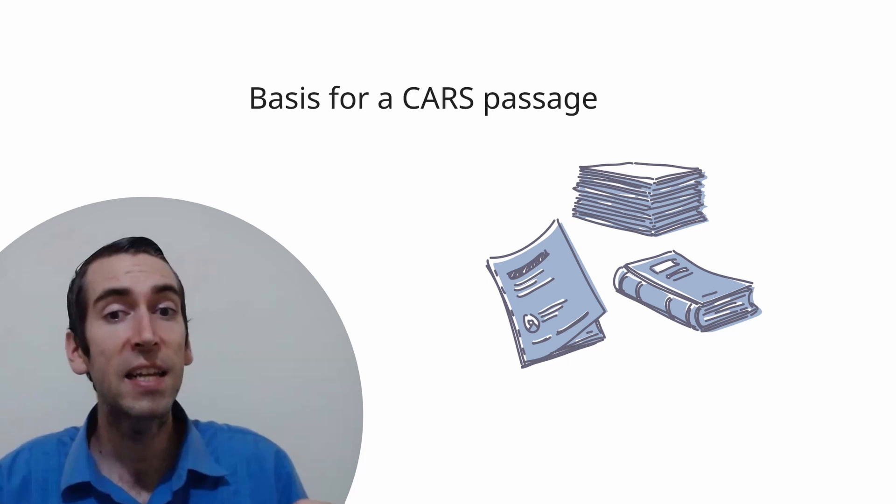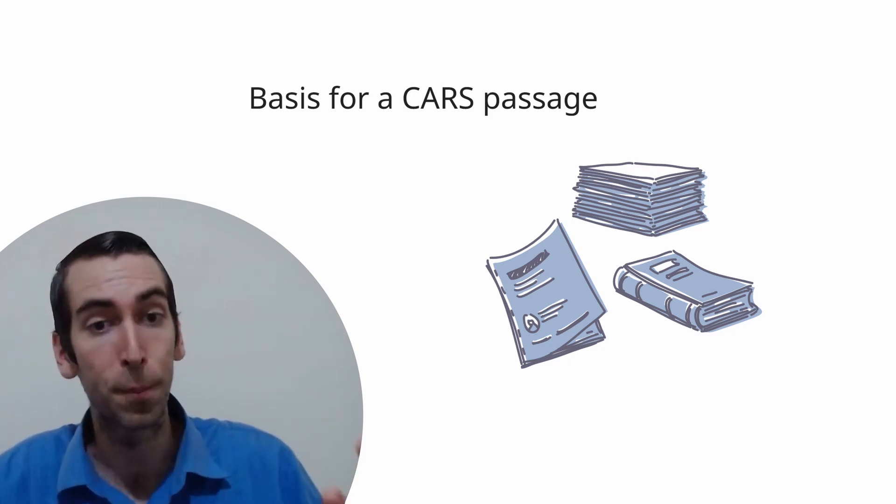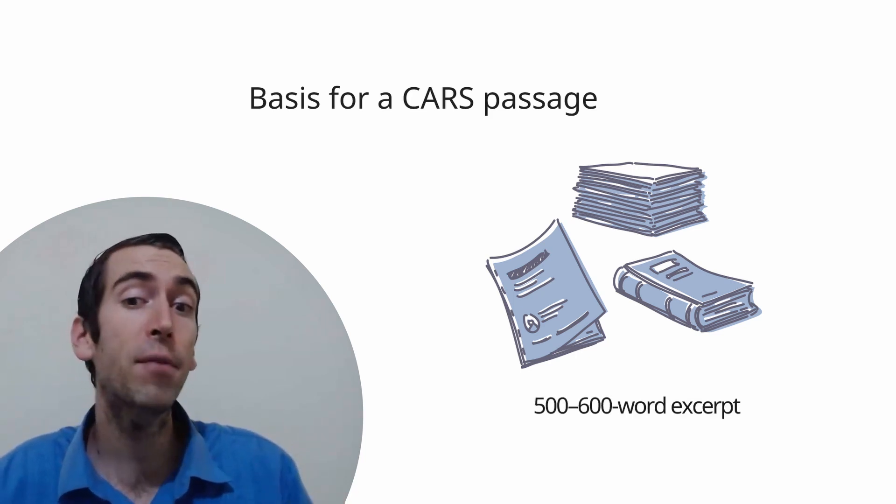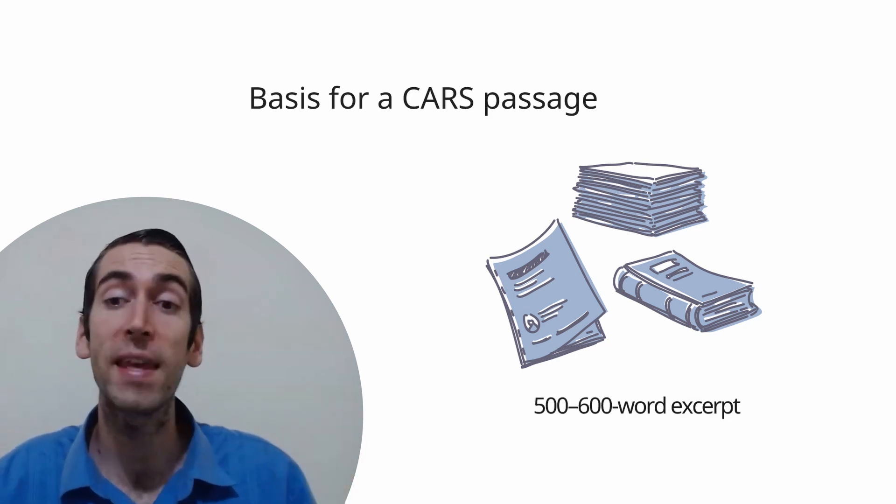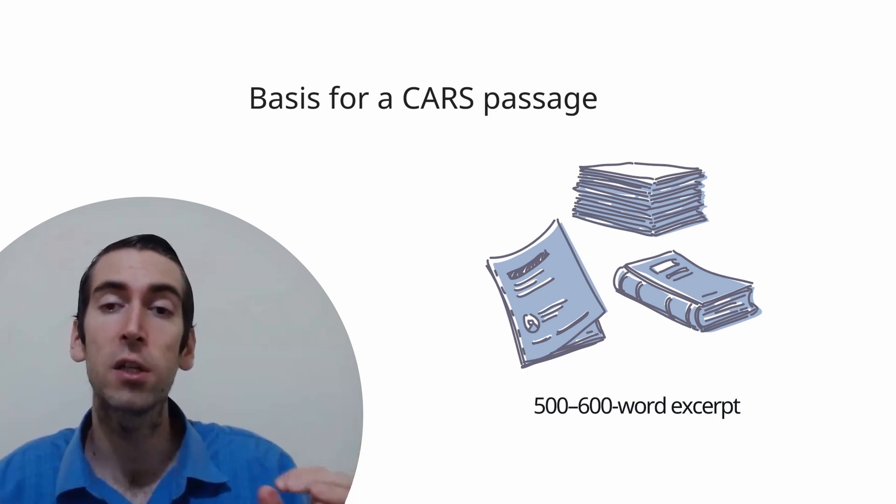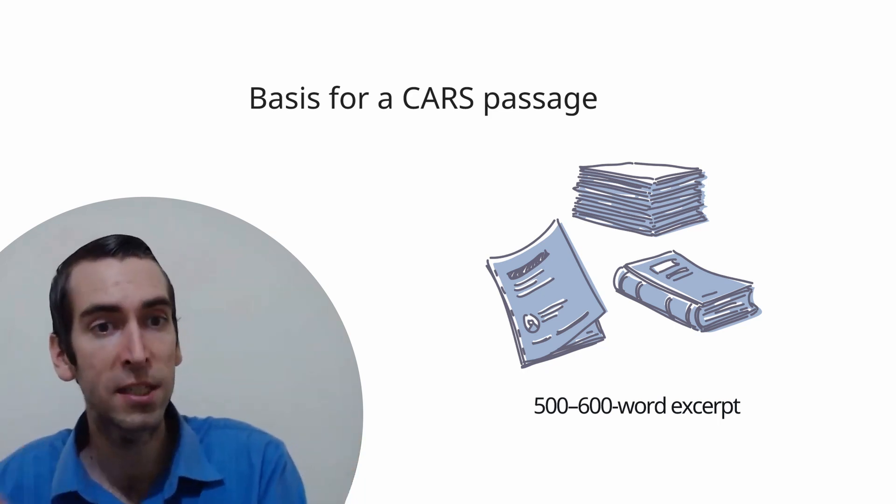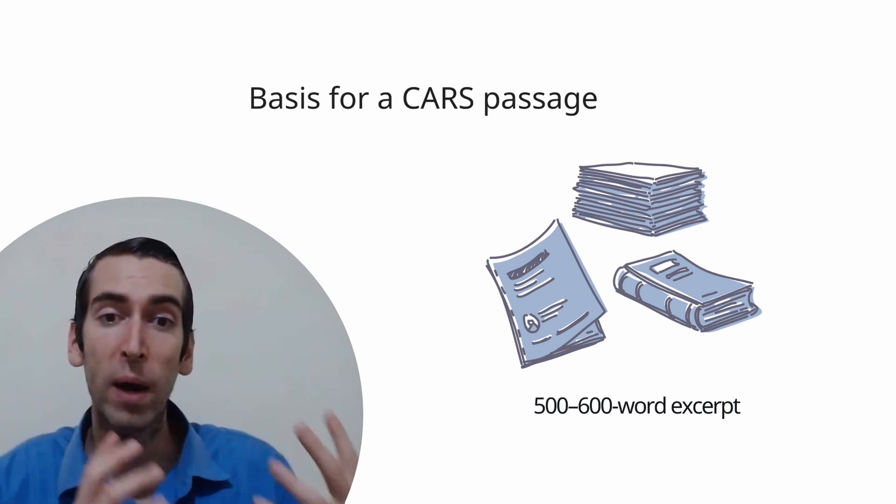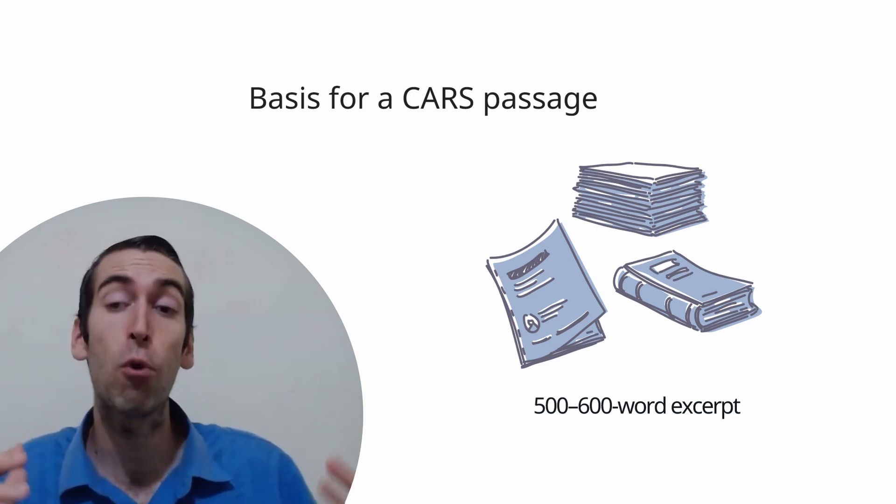Having stated that the basis for a CARS passage is this longer journal article, magazine article, or book, we take a 500-600-word excerpt of that for the exam itself. All of the information necessary to answer every CARS question is present in the passage itself, or the context of the question and answer choices you are presented with. We might nonetheless ask ourselves, how could we improve our critical reading of CARS passages with the strategic use of outside reading?